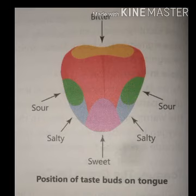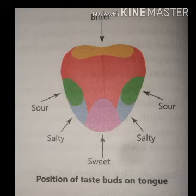Nerve cells then deliver the signal to the brain, and the brain interprets it as sour, bitter, sweet, or salty taste. The brain describes this stimuli — this signal — identifying it as sour, bitter, sweet, or salty taste.